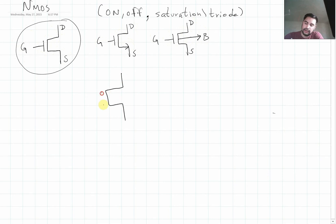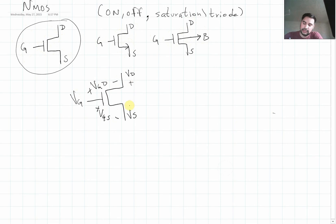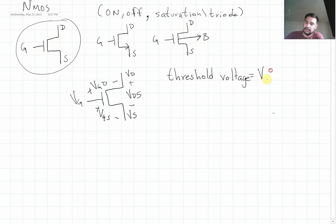On the NMOS transistor, we're going to have four voltages. One is going to be the gate, another one is the drain, and another is the source. The voltage between the gate and the drain is called VGD. Another voltage is VGS — gate to source — and the other is VDS — drain to source. The fourth voltage is called threshold voltage, represented as VTN, where N is for NMOS. We're going to use this voltage as 0.5 volts.